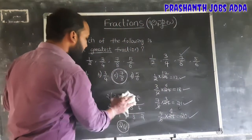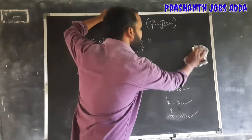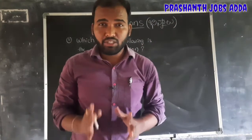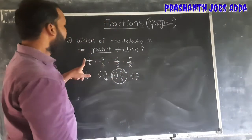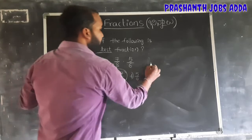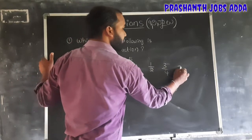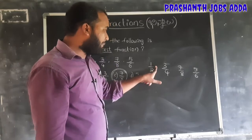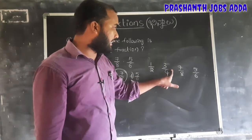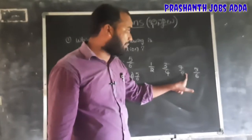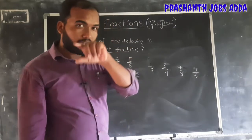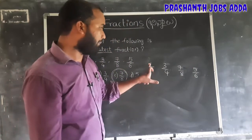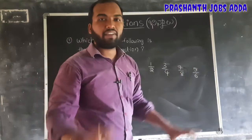Third method is simple and useful from an examination point of view. Just within 5 seconds you can answer. The fractions are 1 by 2, 3 by 4, 7 by 8, and 5 by 6. We observe the gap — the difference between numerator and denominator is 1 for each fraction.